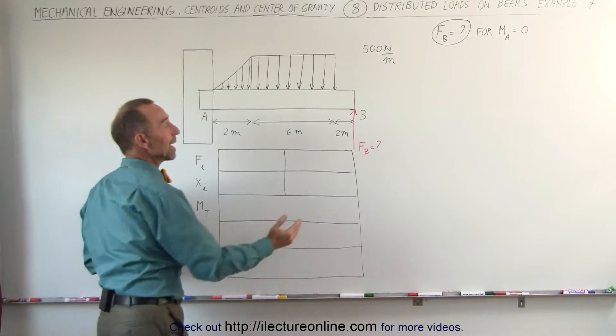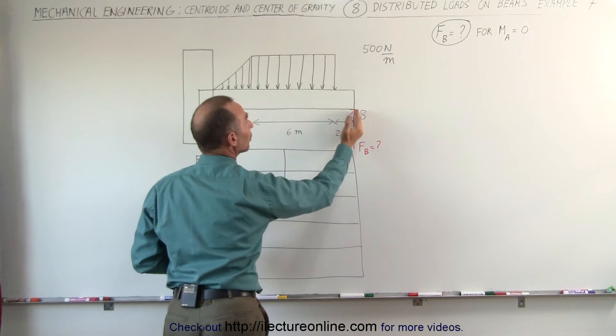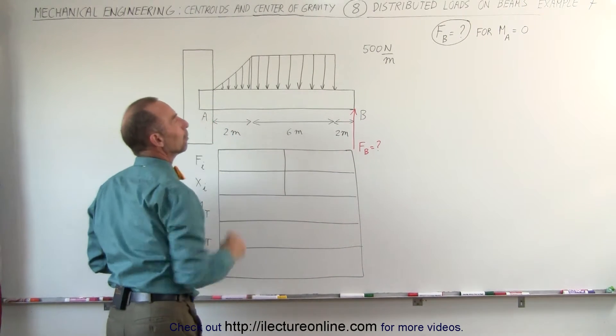And the question is, what is the reactionary force at B required to ensure that there's no moment about point A?